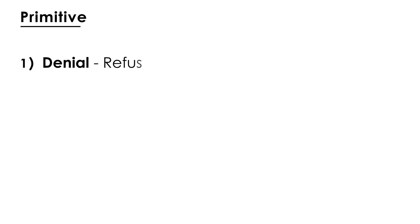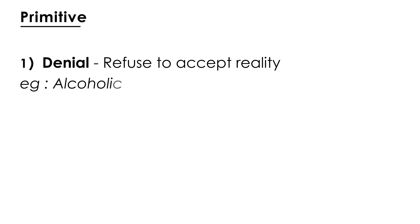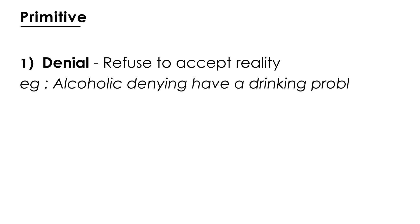The first primitive defense mechanism is called denial. Denial is when a person refuses to accept reality. One common example is a patient who is an alcoholic and basically denies having a drinking problem no matter what you or the family tells him — he is in complete denial. This can also happen in certain medical conditions where a person is diagnosed with cancer and just refuses to accept it.